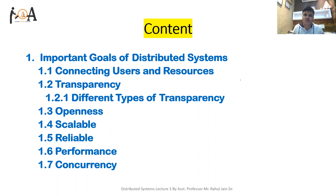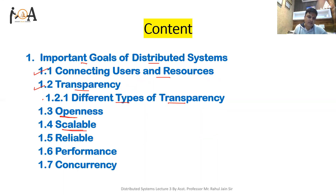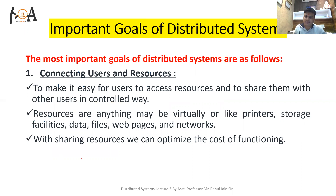Here in this session we are going to discuss the goals of distributed systems. The content covers: first, connecting users and resources; then transparency and different types of transparency; then openness; then how a system should be scalable; then reliability, performance, and concurrency. So let's start one by one.